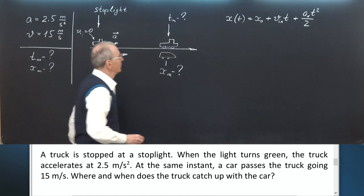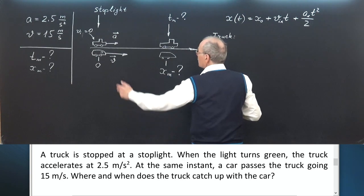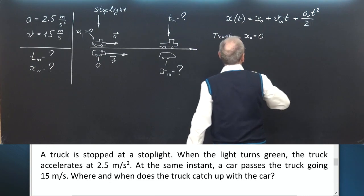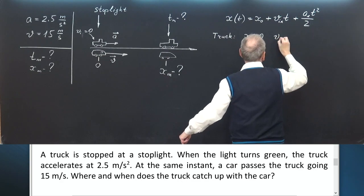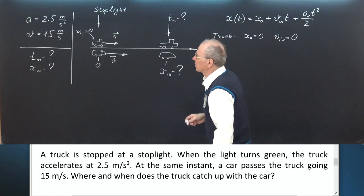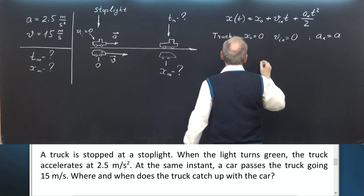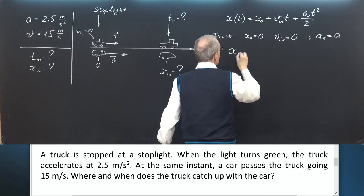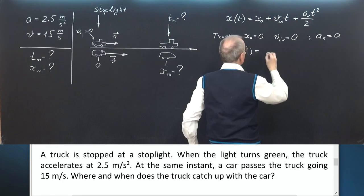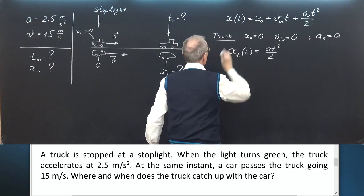For the truck: initial position is zero, initial velocity is zero, acceleration is A. So we can write x truck at any moment equals, when you substitute these numbers into this formula, equals a t squared over 2. That's for the truck.